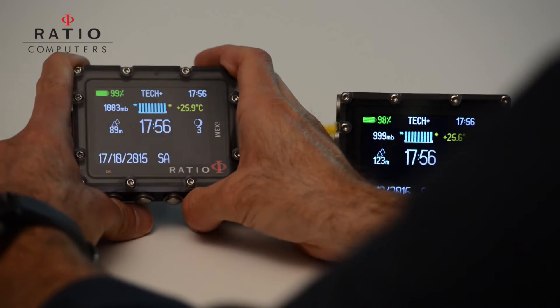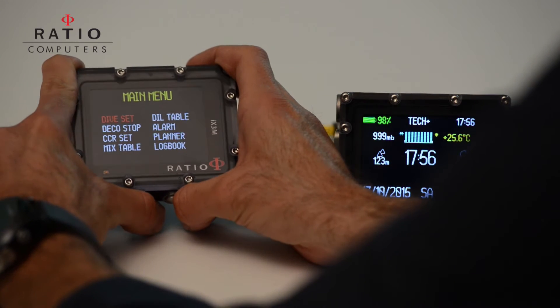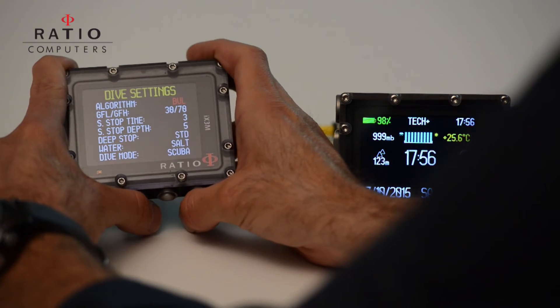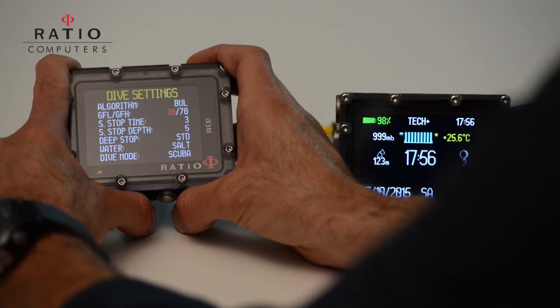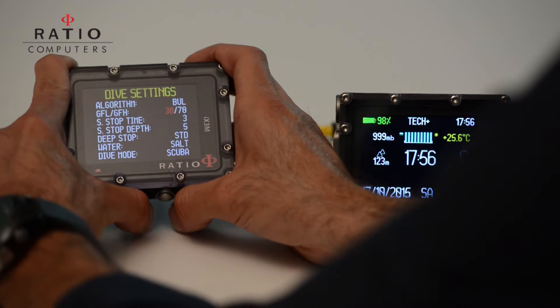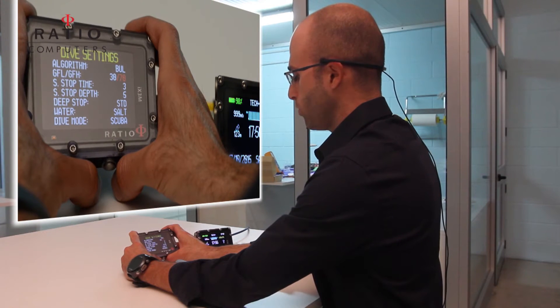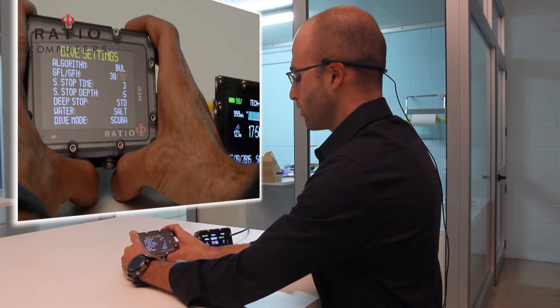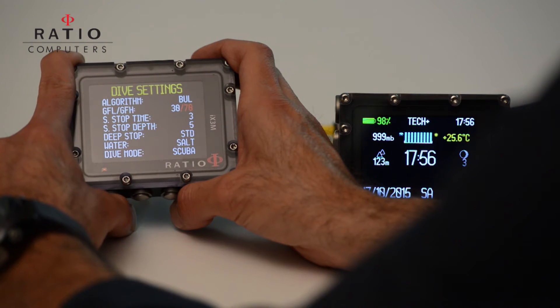First enter in the main settings, then enter in the diver settings to set up the Buhlmann algorithm. Set up the gradient factor low and set up the gradient factor high. In this example we will use for gradient factor low 30 percent and for gradient factor high 70 percent.